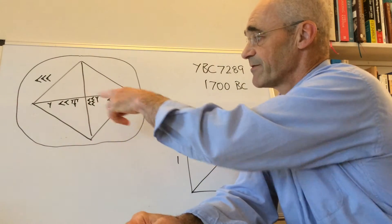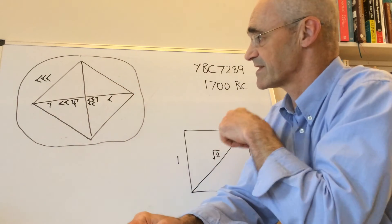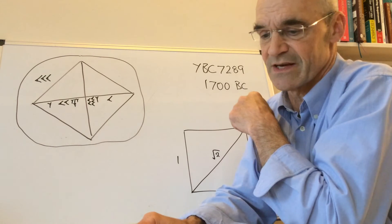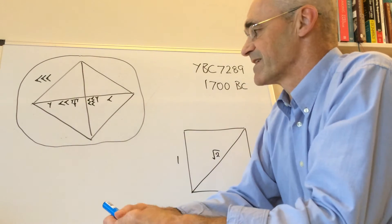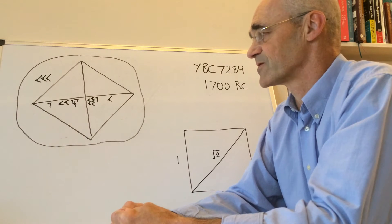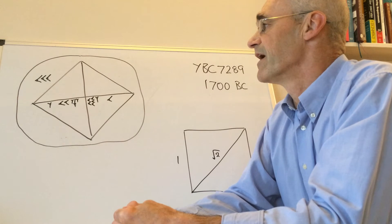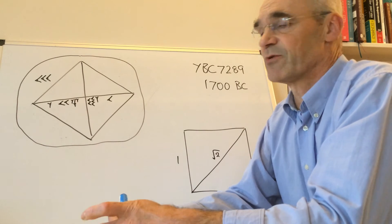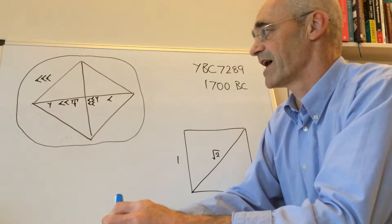The inscription on the tablet is a square with the diagonals marked and some numerals. The Babylonians worked in base 60, although when they wrote their numbers down they also kind of used base 10. Let me show you what I mean.